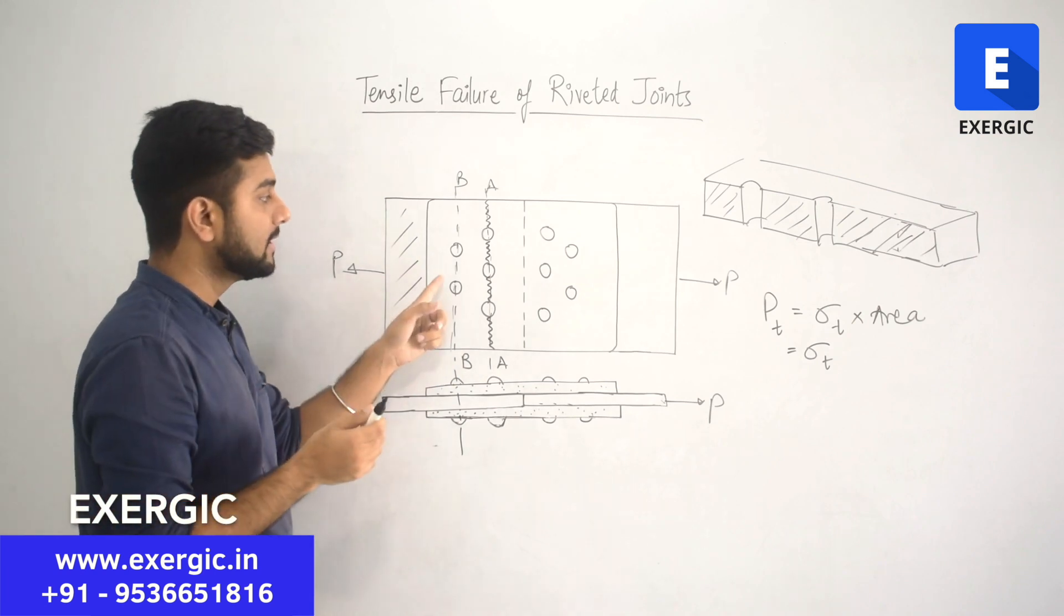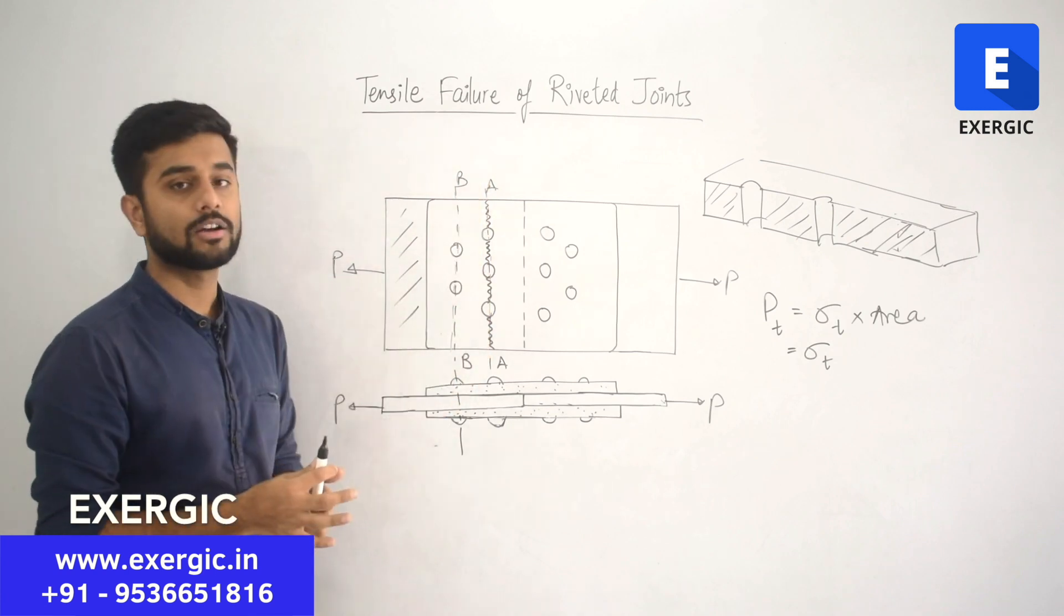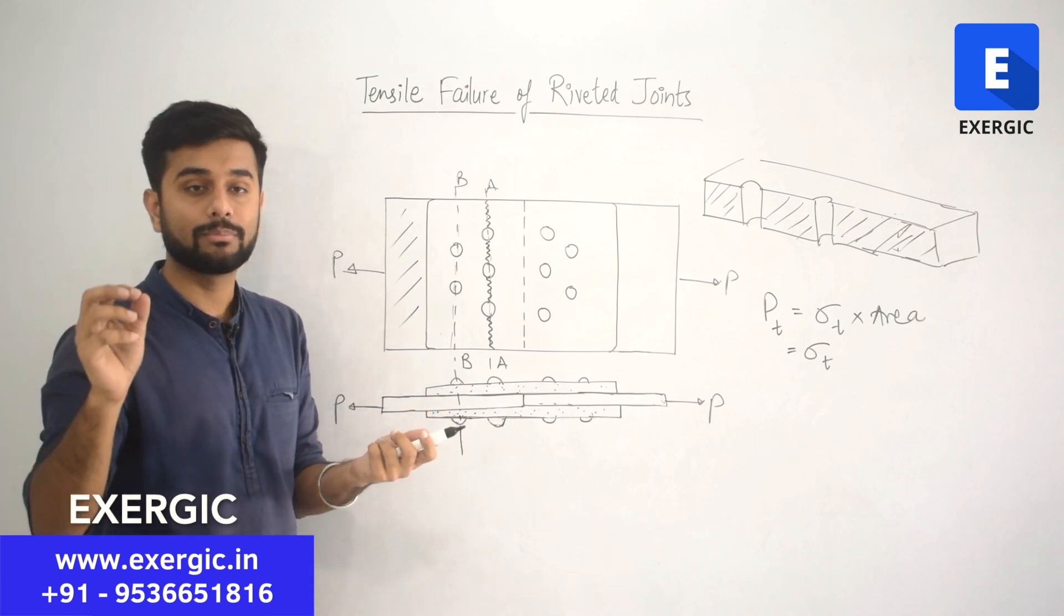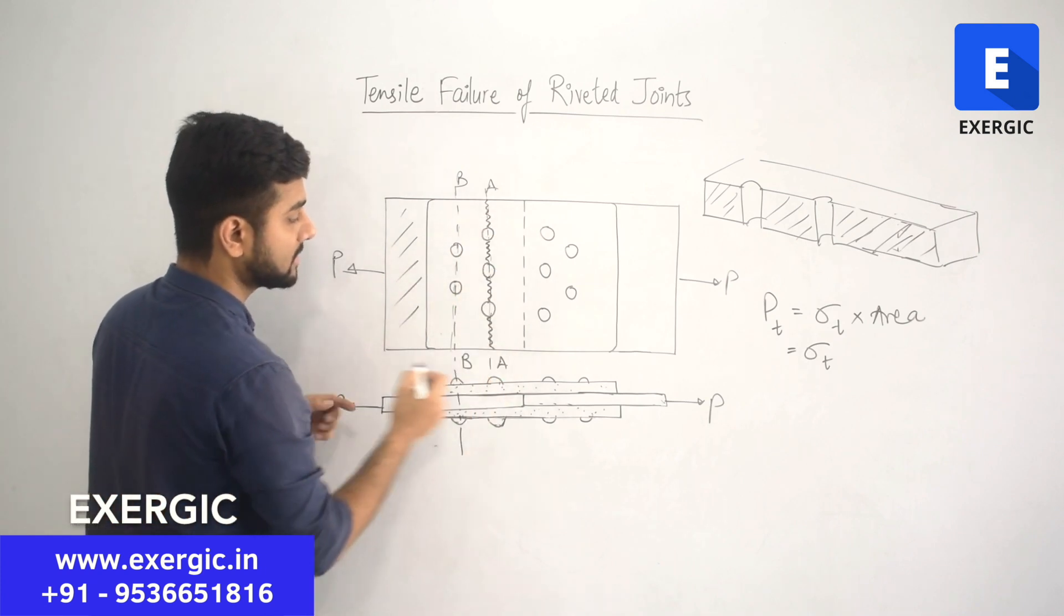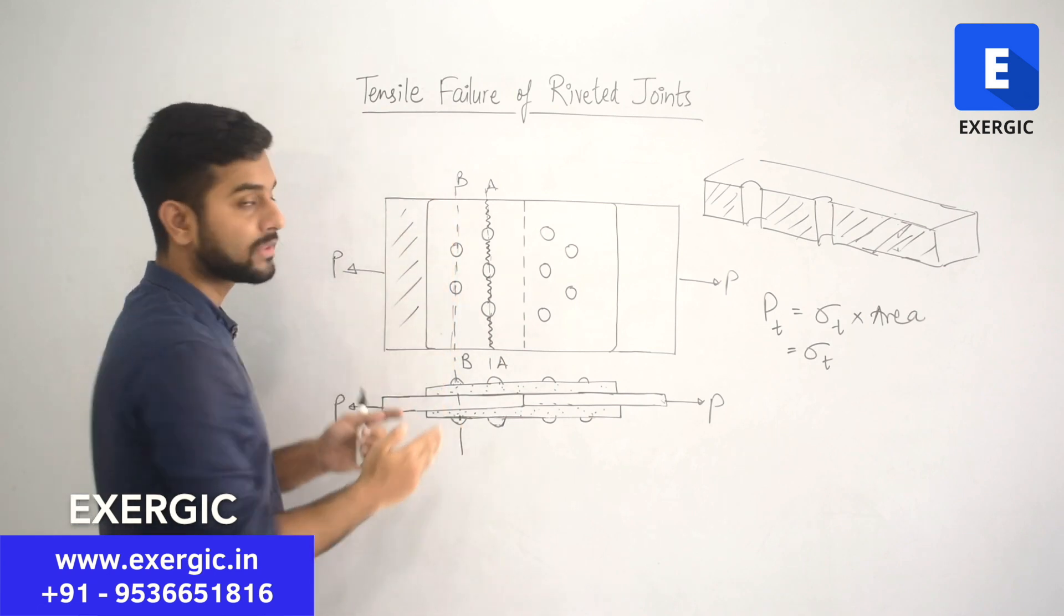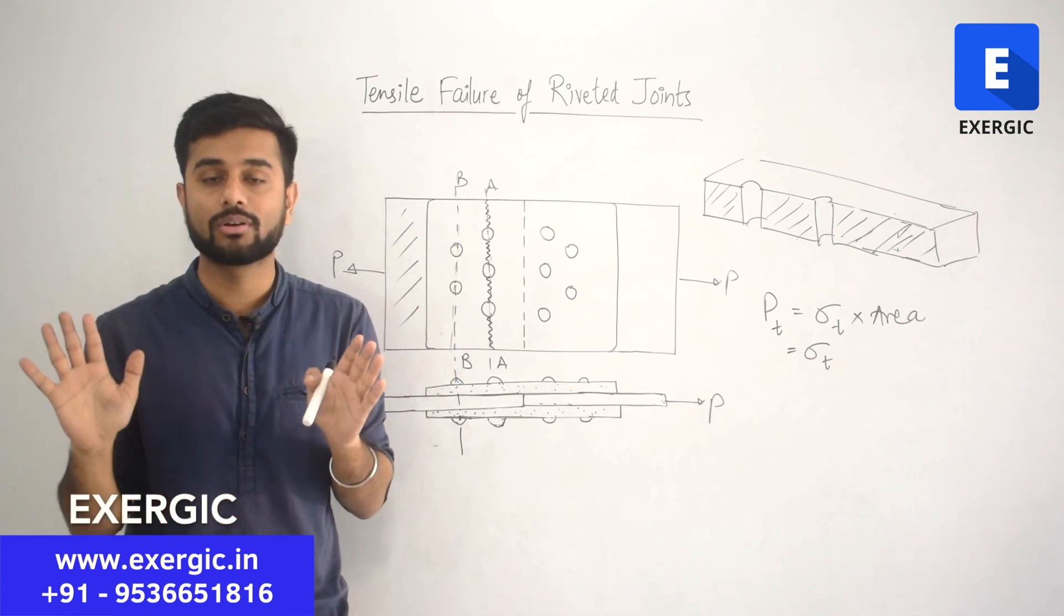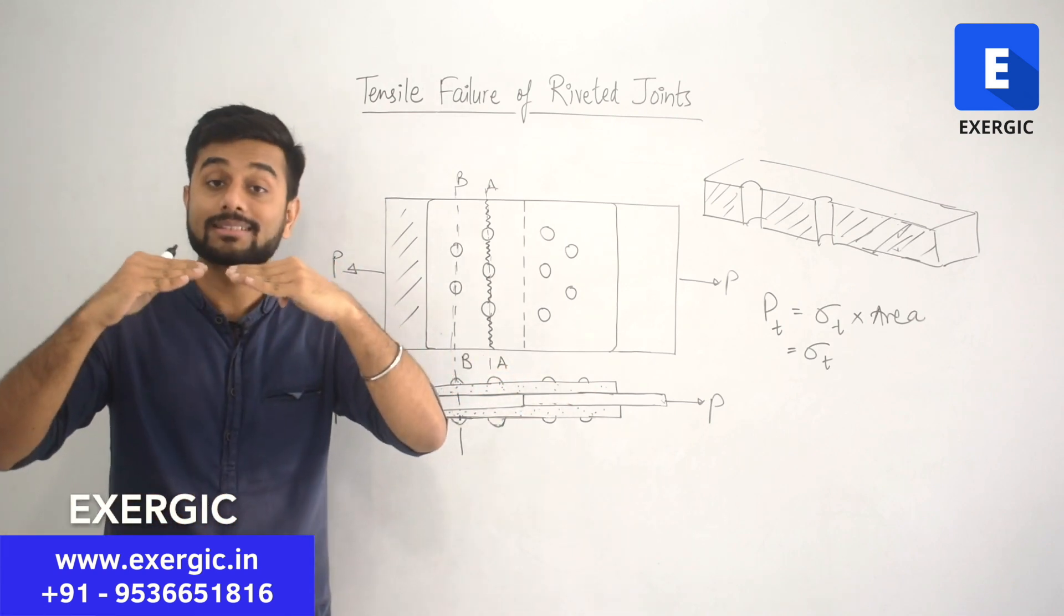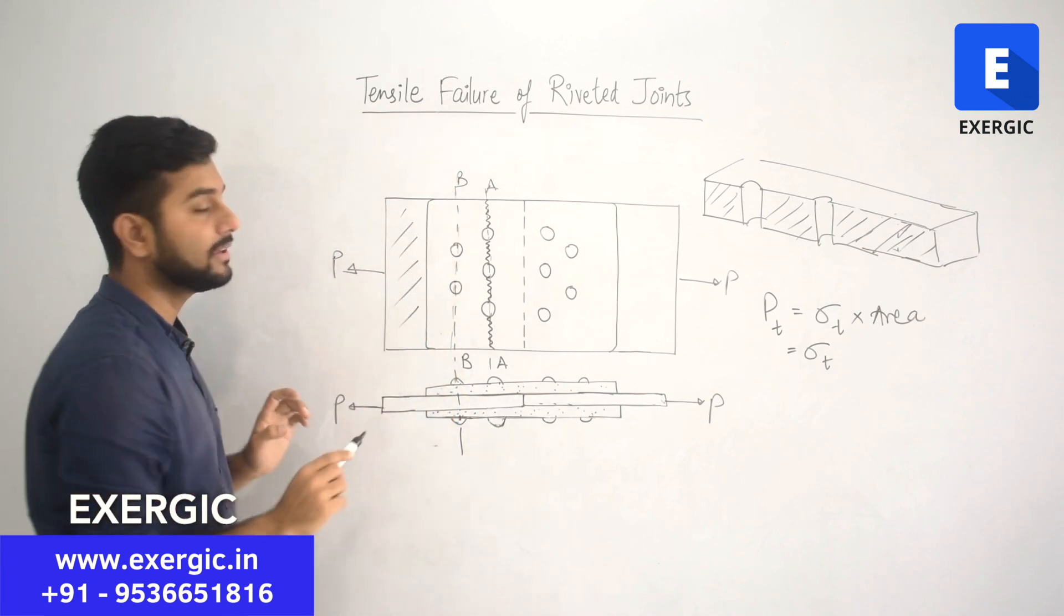In this case, even if the plate has failed in this section, some of you can think that total plate has failed, now the joint has failed. But if you practically imagine this situation, joint has not failed. Although the plate has cracked from this region, but these rivets here along section BB and the plate along section BB is still intact. It is not broken. So, ultimately plate 1 and 2 are still in contact with each other, are still joined together.